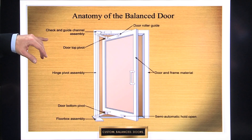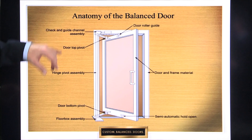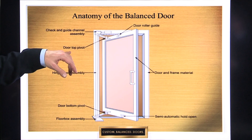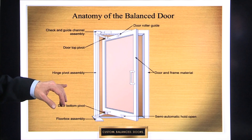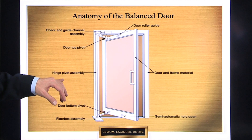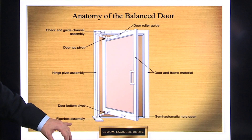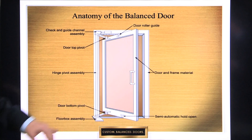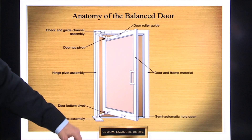Starting at the top, we have the check and guide channel assembly. We have the door roller guide. We have the door top pivot. We have the hinge pivot assembly. We have the door bottom pivot and the bottom arm. We have the floor box assembly sitting down on the floor.